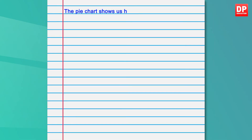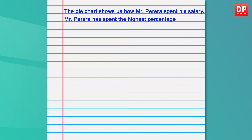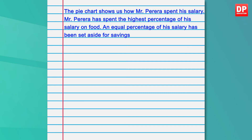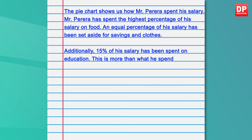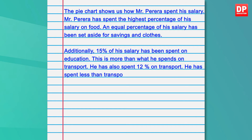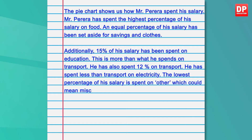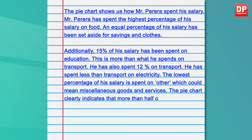Let's do it together. The pie chart shows us how Mr. Pereira spent his salary. Mr. Pereira spent the highest percentage of his salary on food. An equal percentage of his salary has been set aside for savings and clothes. Additionally, 15% of his salary was spent on education — this is more than what he spends on transport. He spent 12% on transport and less than that on electricity. The lowest percentage is spent on 'other,' which could mean miscellaneous goods and services. The pie chart clearly indicates that more than half of his salary was spent on food, education, and clothes.